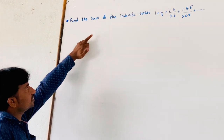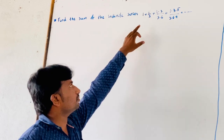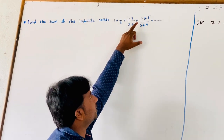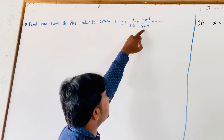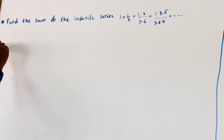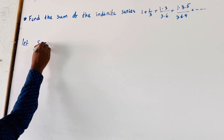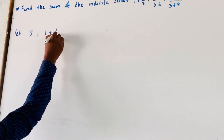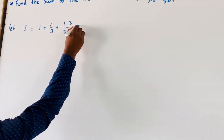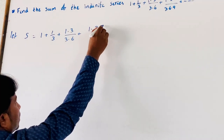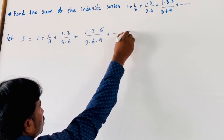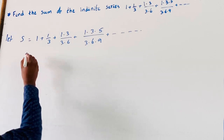Find the sum of the infinity series: S = 1 + 1/3 + (1·3)/(3·6) + (1·3·5)/(3·6·9) and so on to infinity. Let us unpack that series.